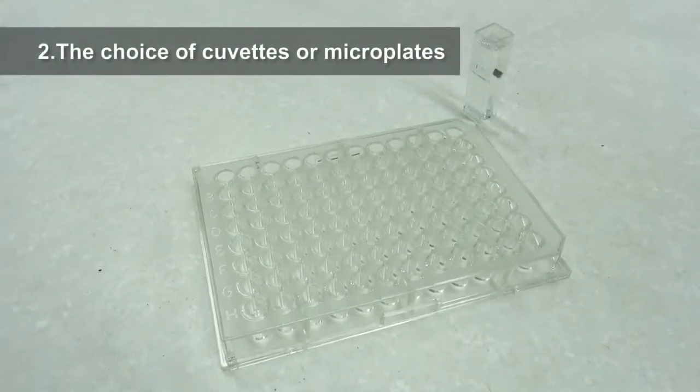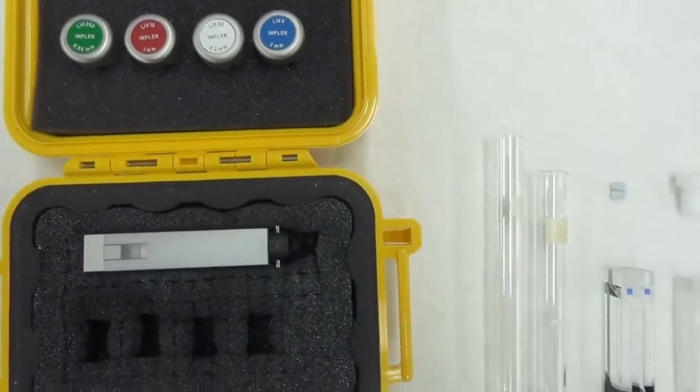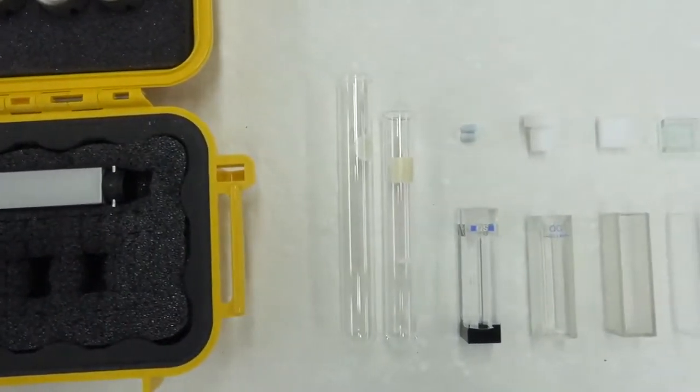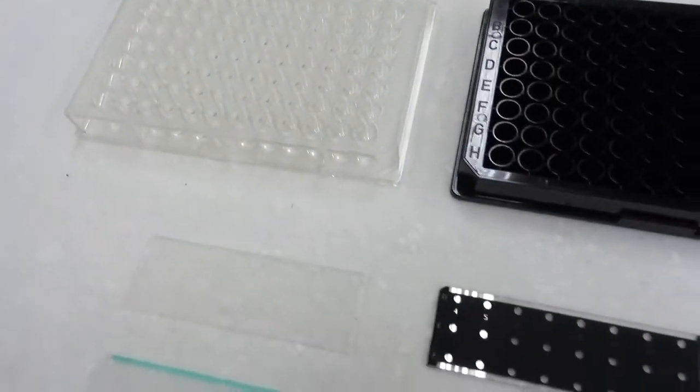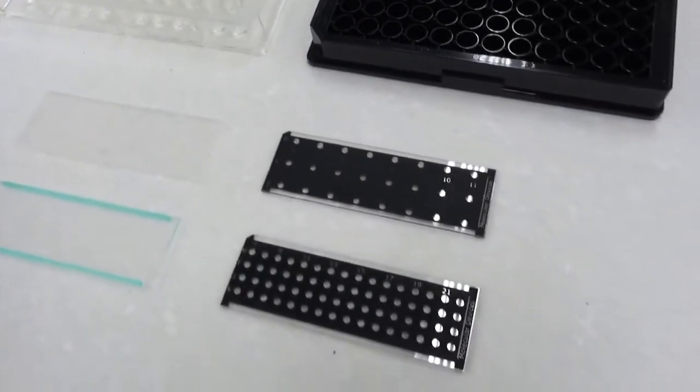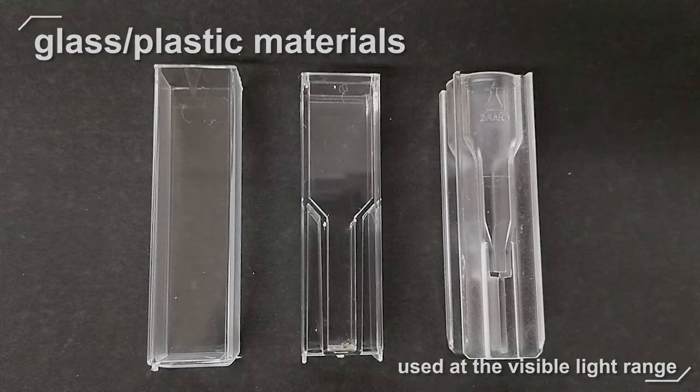2. The choice of cuvettes or microplates. Depending on the kind and volume of the sample to be measured by a spectrophotometer, different types of cuvettes or microplates made of different materials and with different appearances should be used. Glass or plastic materials absorb ultraviolet light, thus can only be used at the visible light range.